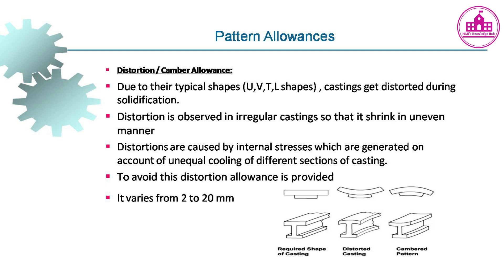Distortion or camber allowance: Due to their typical shapes, castings get distorted during solidification. Distortion is observed in irregular castings that shrink in an uneven manner. Distortions are caused by internal stresses generated by unequal cooling of different sections of the casting. To avoid this, a distortion allowance is provided, varying from 2 to 20 mm.